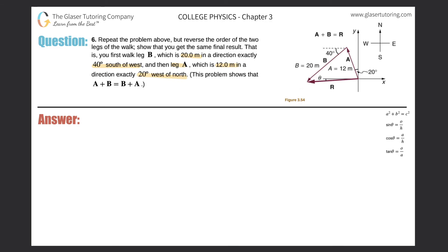In order to do this problem, let's first take a look at each of these vectors individually. Draw a coordinate system, and then draw the vector that's stated, meaning the 20-meter vector at 40 degrees southwest.